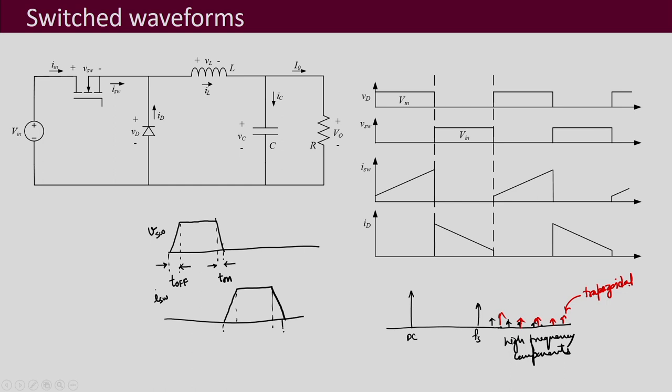As turn-on and turn-off times change, and you may be having different spikes, all that will affect the frequency spectrum and the high frequency components present in that particular waveform. This is going to affect the EMI performance — the electromagnetic interference problem will be affected by that. It may increase or decrease depending on the nature of the waveform, and it will also depend on the turn-on and turn-off times.